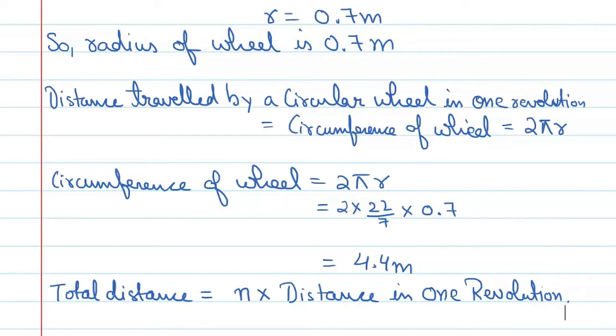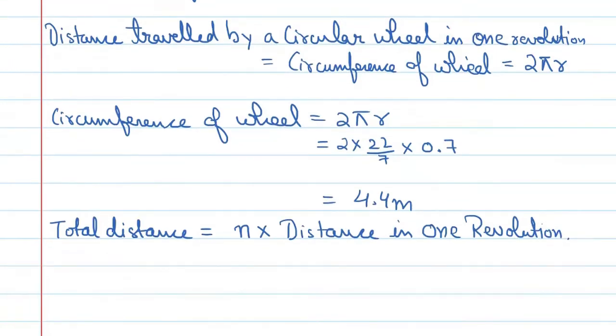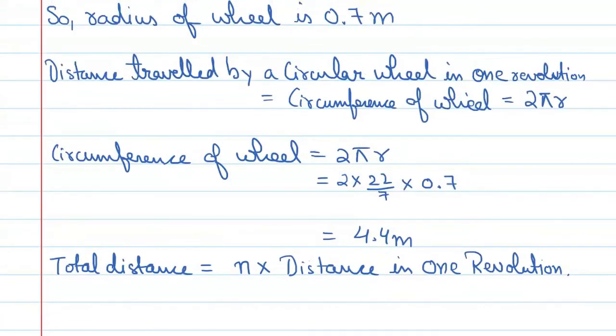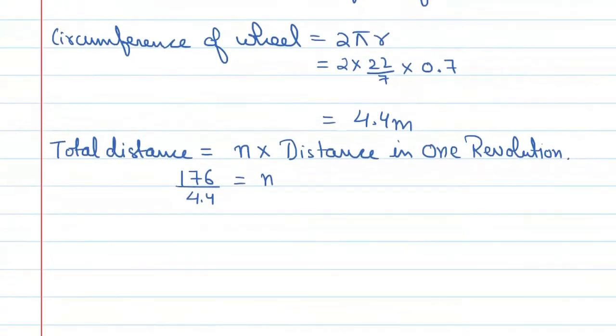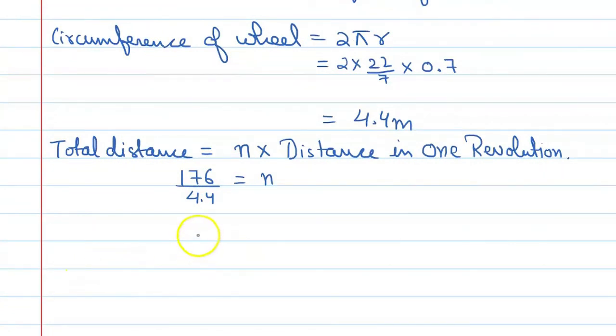From here if we find the value, you can say N equals total distance divided by distance in one revolution. So N equals 176 divided by 4.4. This equals 40.